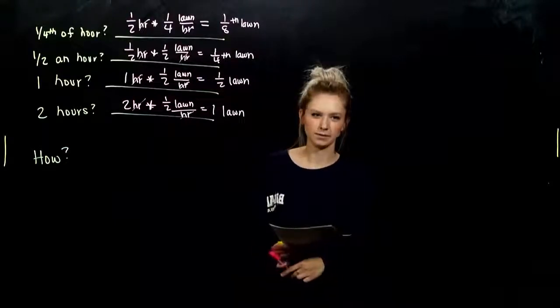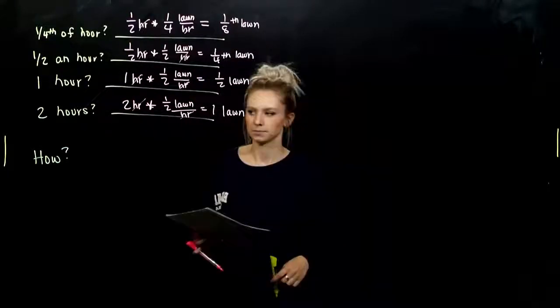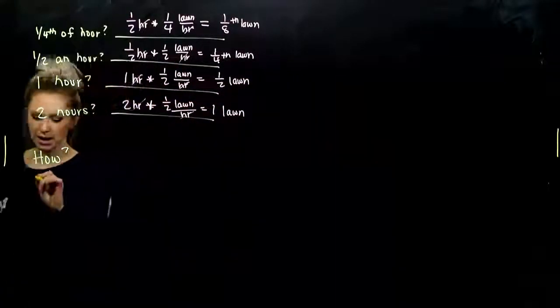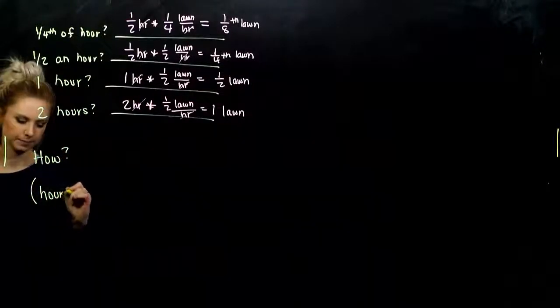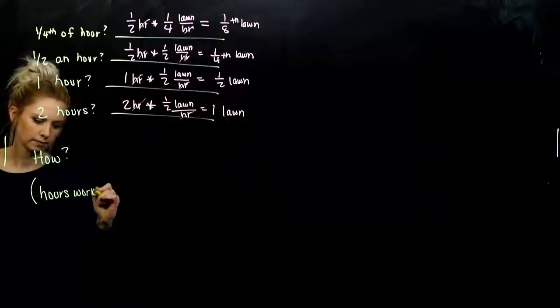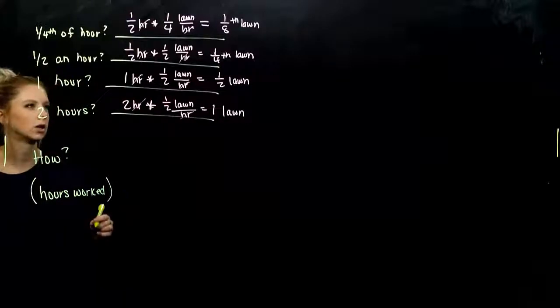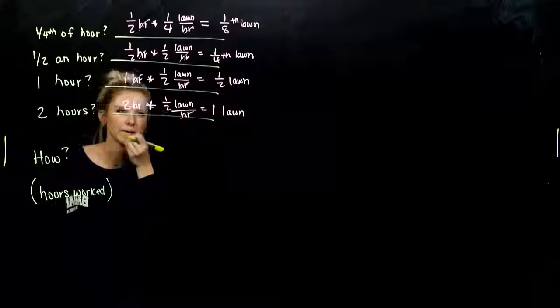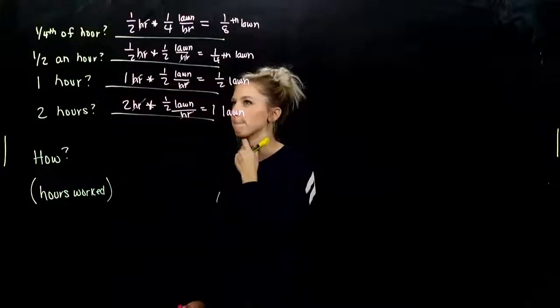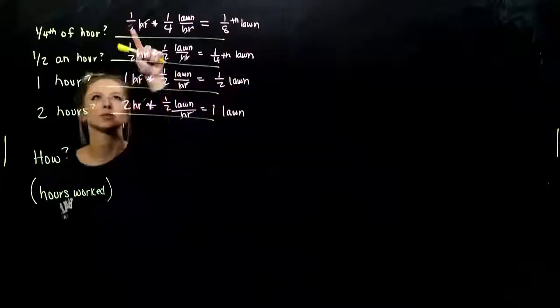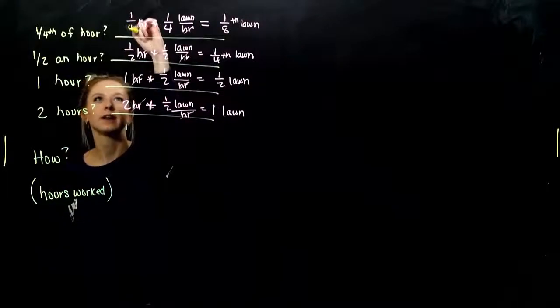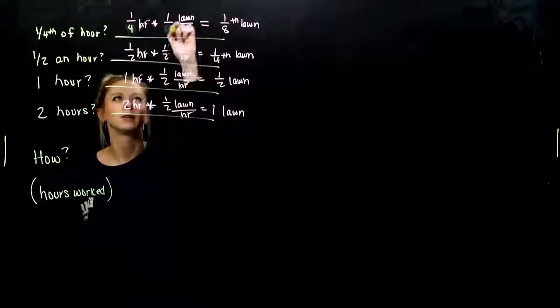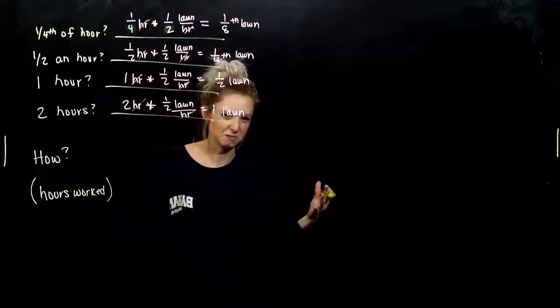So, how are we calculating these? What's happening? I've got my hours worked. How long I'm working for—two hours, one hour, half an hour, or a fourth of an hour. Oh, now they switched around, don't they? Fourth of an hour, and I can do half of a lawn. We still get the same value out.